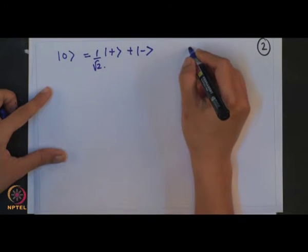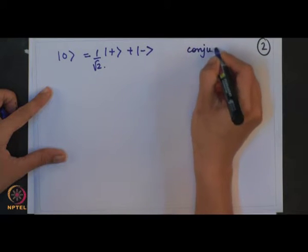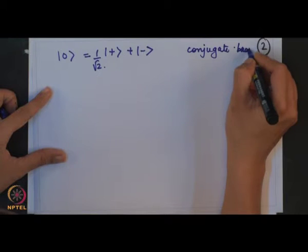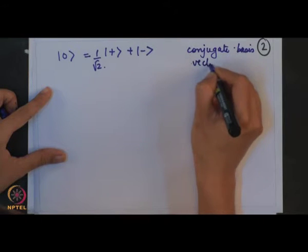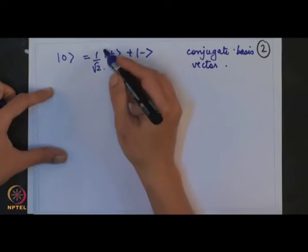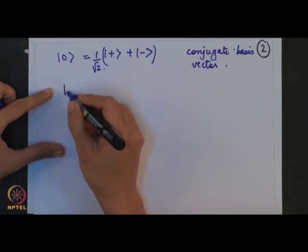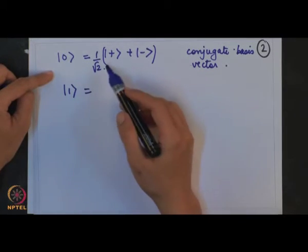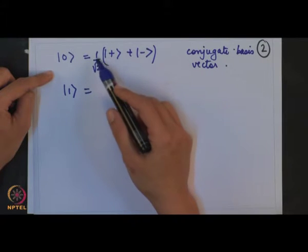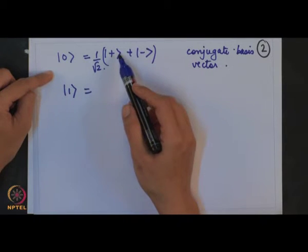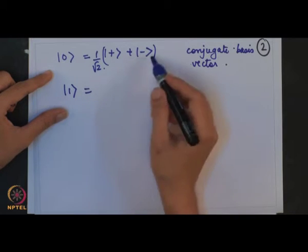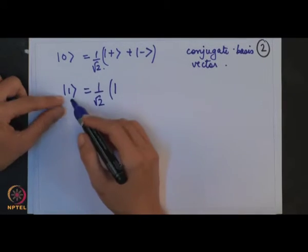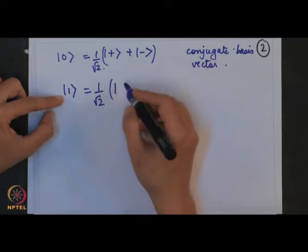These are called conjugate basis vectors. State ket-|0⟩ is represented as (1/√2)(ket-plus + ket-minus), and the corresponding ket-|1⟩ will be the other linear combination.